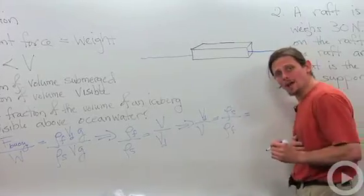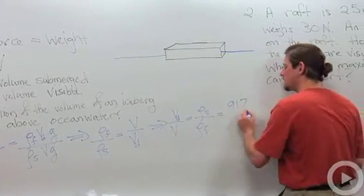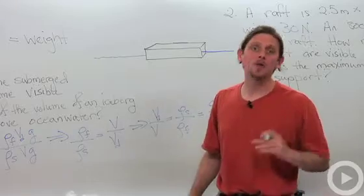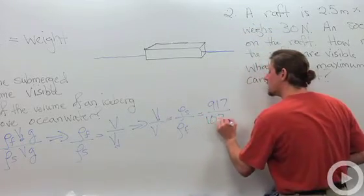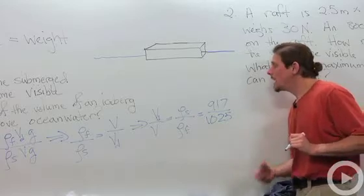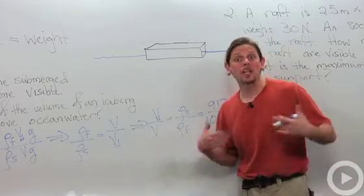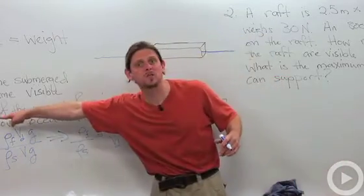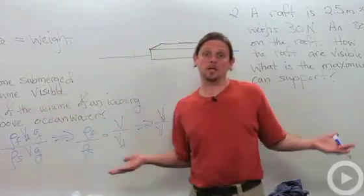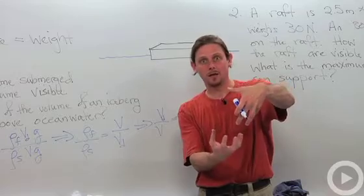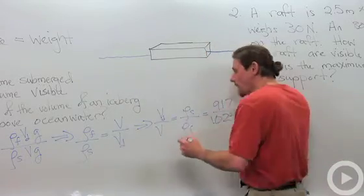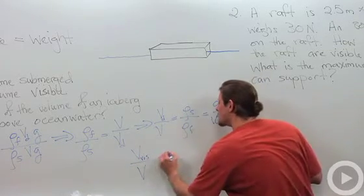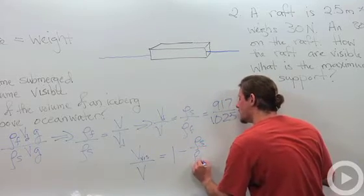The density of ice is 917 kg/m³. For the fluid we'll use ocean water rather than pure water because it's a little different — it's 1025 kg/m³. This ratio gives us the fraction that is displaced, meaning the fraction underneath. But we wanted the part visible above. The part visible above plus the part beneath must equal one, so the volume visible divided by the total volume equals one minus the density of the solid over the density of the fluid.